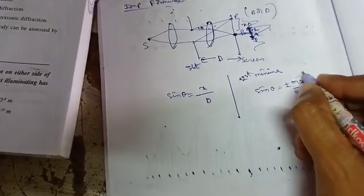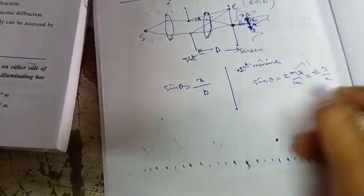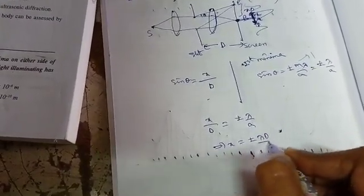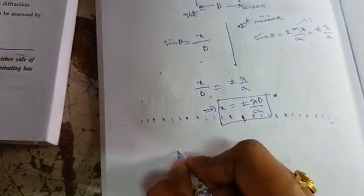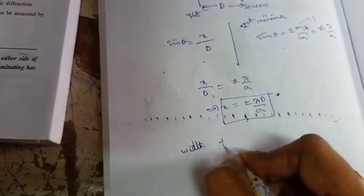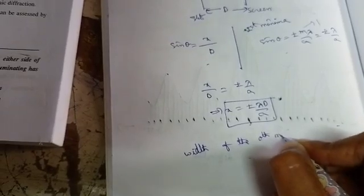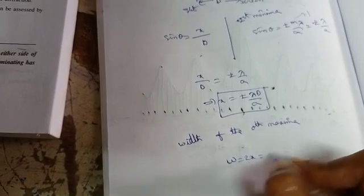X over D is equal to plus or minus lambda by a, so X is equal to plus or minus lambda D by a. The width of the central maximum is 2X, so W equals 2X equals 2 lambda D by a. This is a very, very important formula.